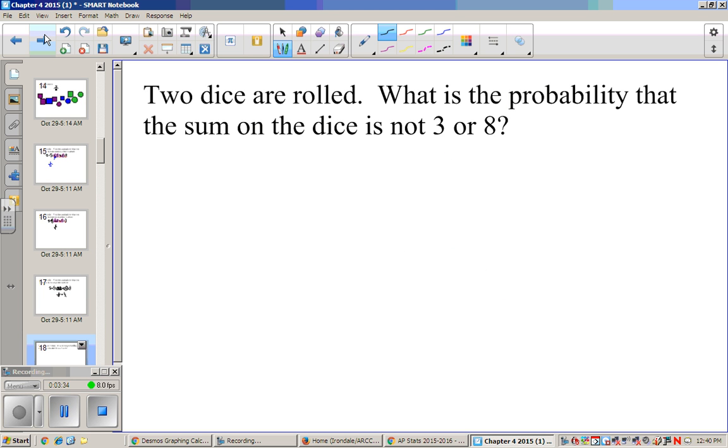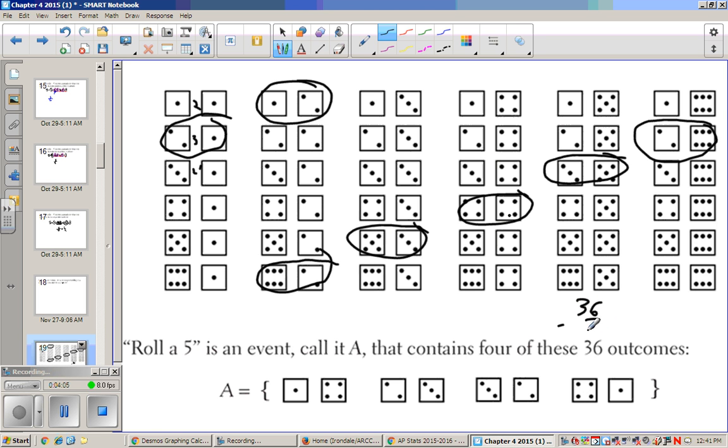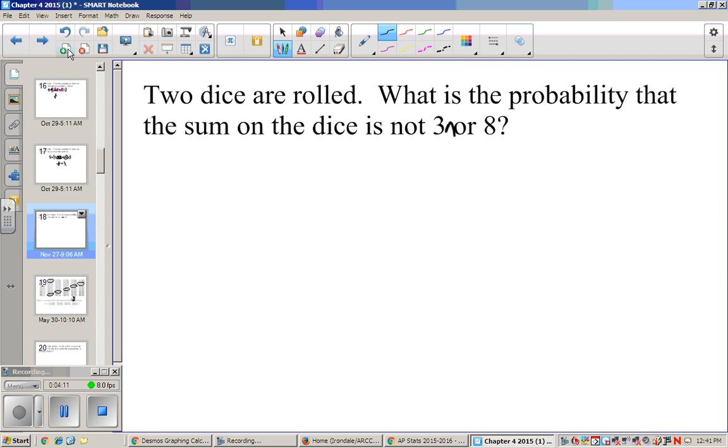Now if 2 dice are rolled, what's the probability that the sum is not 3, nor 8? So it's not a 3, nor is it 8. So if we look at this, 3 is going to be here. 8 is this diagonal. So that's 1, 2, 3, 4, 5, 6, 7. So if we know there's 36 outcomes, if I subtract 7, that means there's 29 that are not. So we know that this is 29 out of 36.